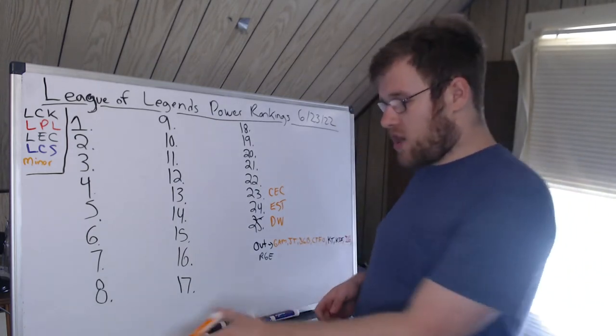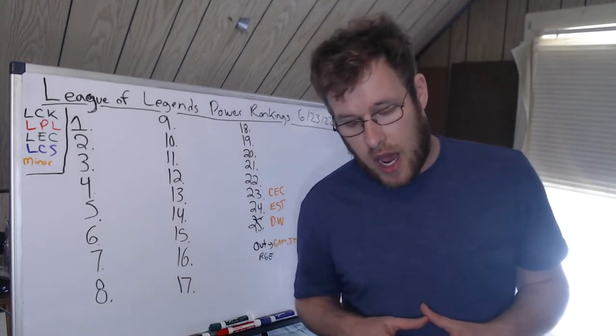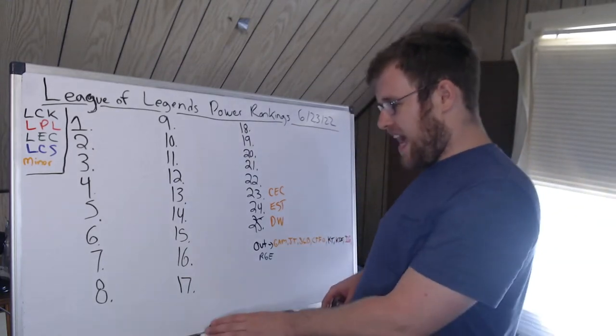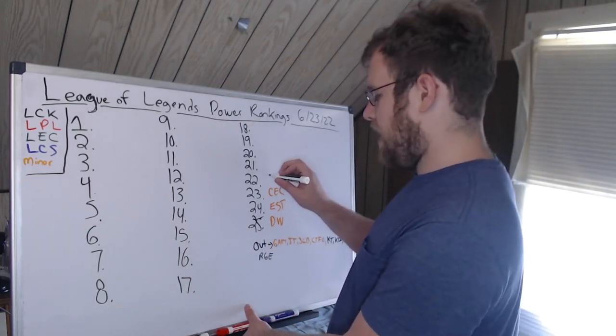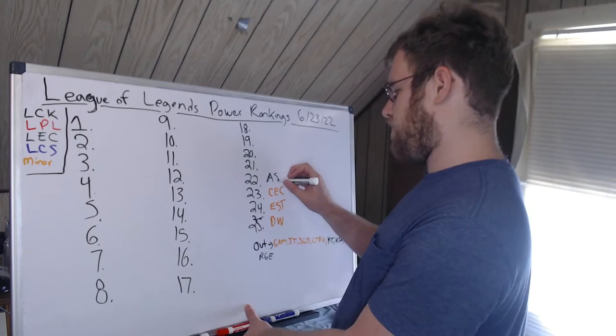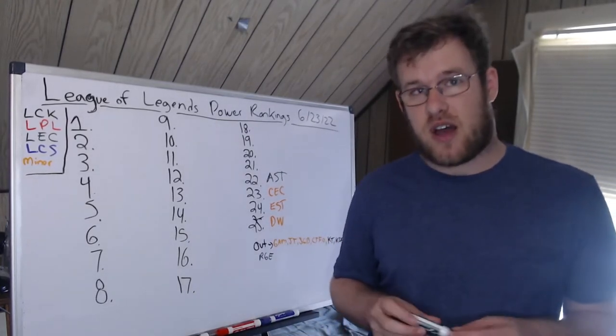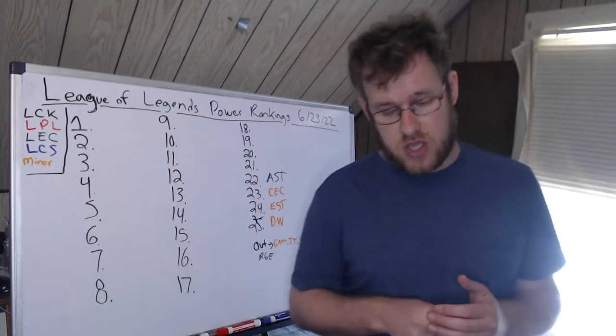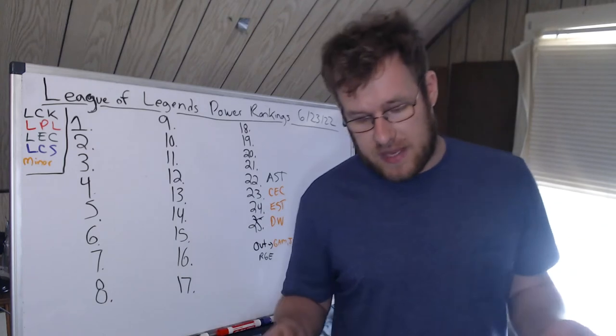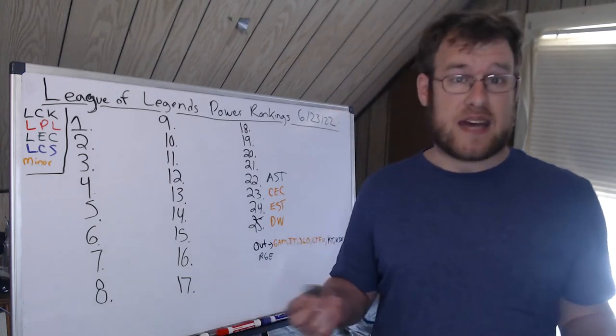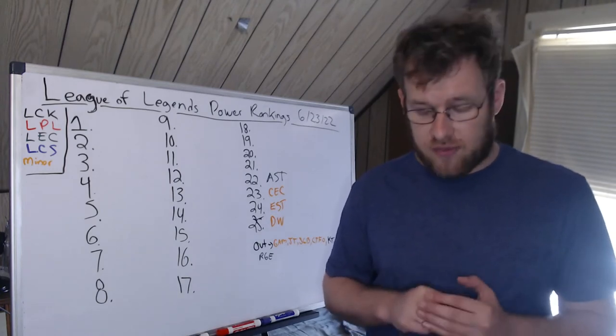22nd, we have Astralis. You're going to say, why the hell would you put Astralis 22nd? You got a good point. Right now they are 2-1. They beat Misfits, beat BDS. Misfits have been awful to start the split, absolutely awful, and they lost to G2.